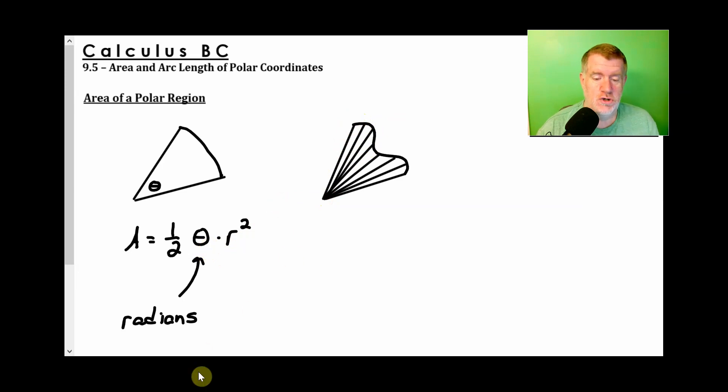So the more sectors you have, the closer your answer. And how many do you want? An infinite amount. So we want to call each of these changes of the vectors delta theta. How long is the distance from here to any point? Well, it's the r value of the function. So the area of a sector would be one half delta theta times r squared.